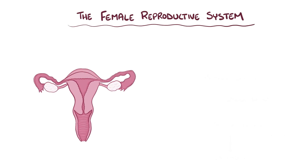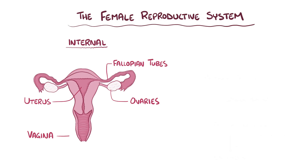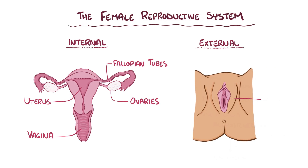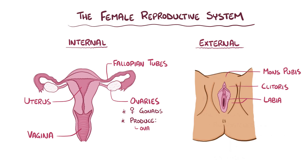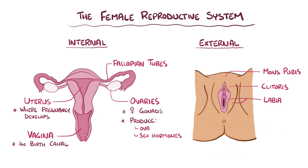As a quick recap, the female reproductive system comprises the internal sex organs — such as the ovaries, the fallopian tubes, the uterus, and the vagina — as well as the external sex organs, such as the labia, the mons pubis, and the clitoris. The ovaries are the female gonads; they produce the ova as well as the female sex hormones. Both the ovaries and the uterus are subject to the pulsatile hormonal activity of the hypothalamus and pituitary glands. The uterus is where pregnancy develops, and the baby comes into the world through the birth canal, or the vagina, that connects the internal to the external sex organs.